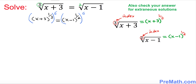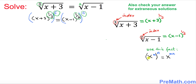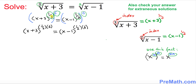We have these two exponents on each side, and we are going to use the rule that x to the power m raised to another power means the exponents multiply. So on the left we get 1 over 3 times 6, and on the right 1 over 2 times 6. One third times 6 is 2, so the left becomes x plus 3 to the power 2. One half times 6 is 3, so the right becomes x minus 1 to the power 3.